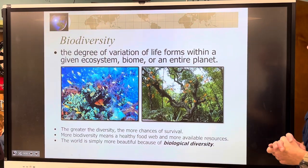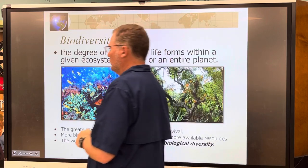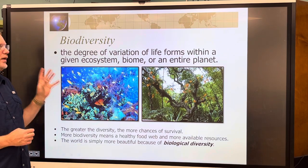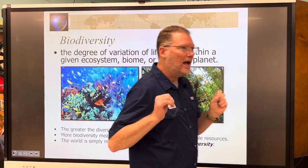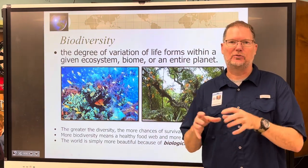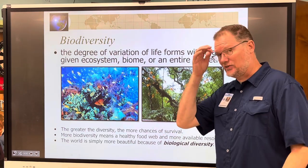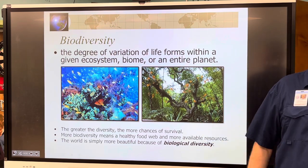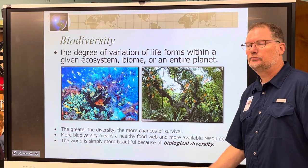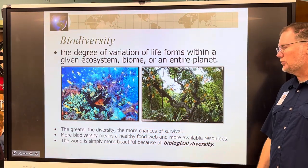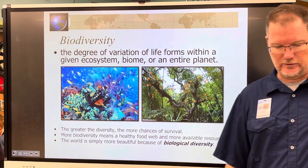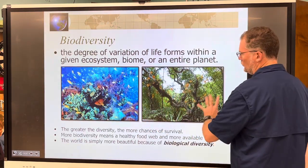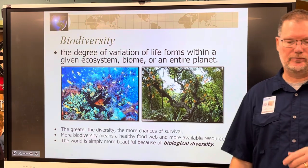Now we're moving on to biodiversity. Biodiversity is the degree of variation of life forms within a given ecosystem, biome, or entire planet — in other words, how many different organisms, plants, and animals live in a particular area. Greater diversity means more chances of survival, a healthier food web, and more available resources. We can see great biodiversity in coral reefs and rainforests.